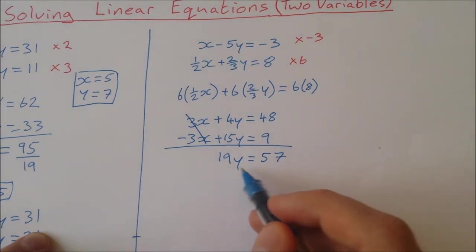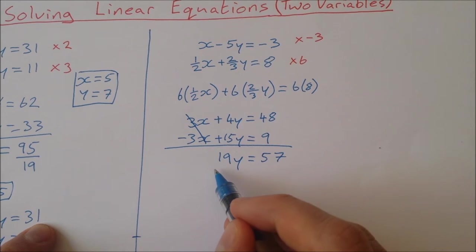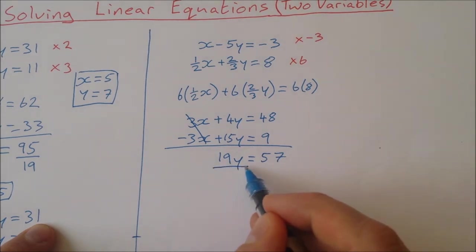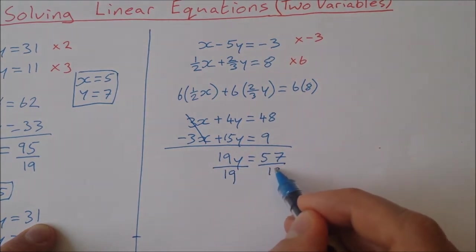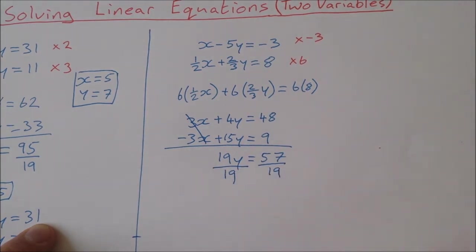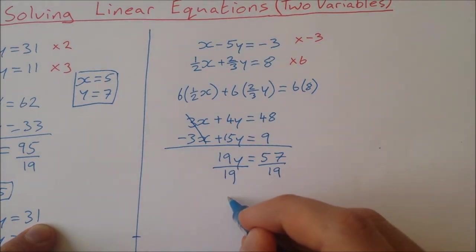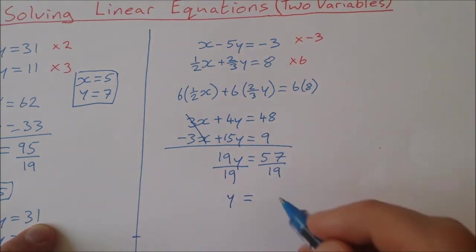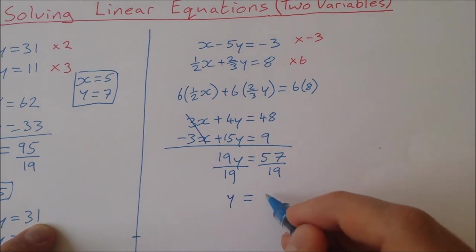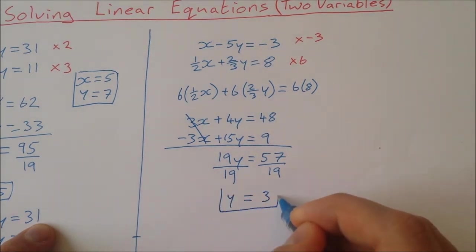Now I have 19y equals 57. I can divide both sides by 19: 57 divided by 19 is 3, so y is equal to 3.